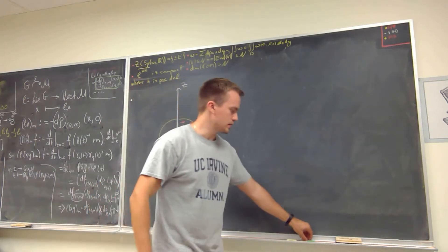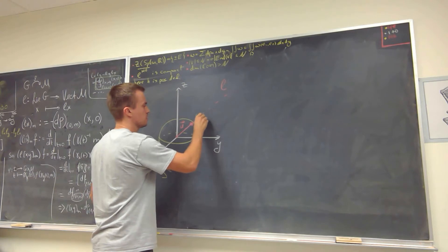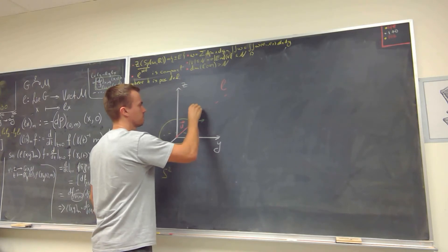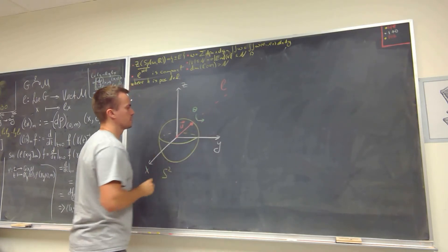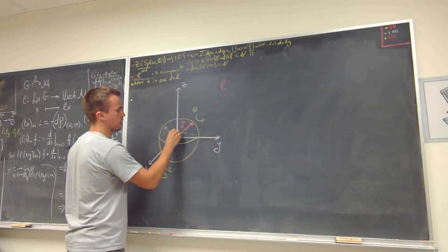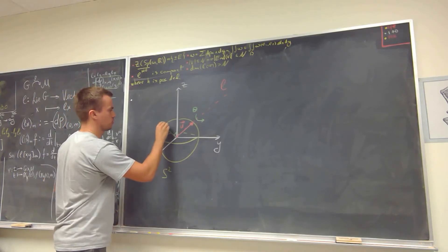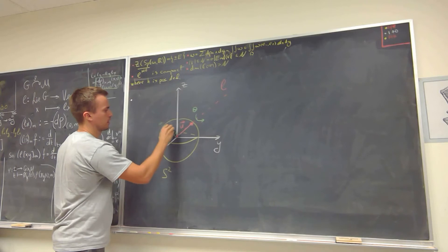And then around this line l, I'm going to rotate my space by some angle theta. So what do I mean by that? I mean that if, for example, I have some vector r which is going to be orthogonal to my vector u, and this vector r is going to be also a unit vector.